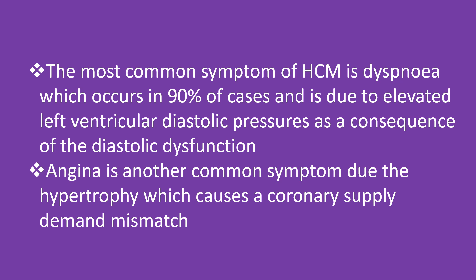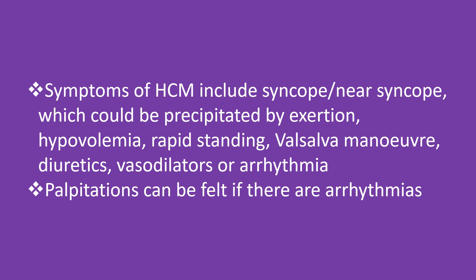The most common symptom of hypertrophic cardiomyopathy is dyspnea, occurring in 90% of cases, due to elevated left ventricular diastolic pressures as a consequence of diastolic dysfunction. Angina is another common symptom due to hypertrophy causing a coronary supply-demand mismatch. Symptoms also include syncope or near-syncope, which can be precipitated by exertion or hypovolemia.